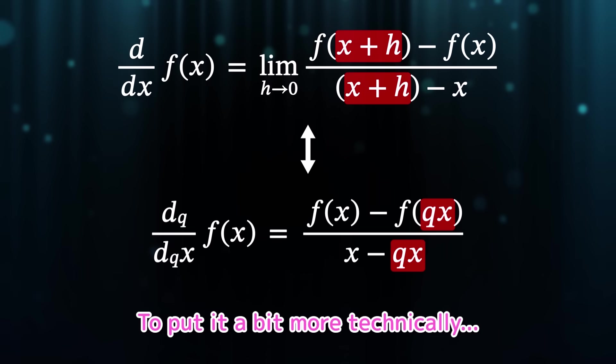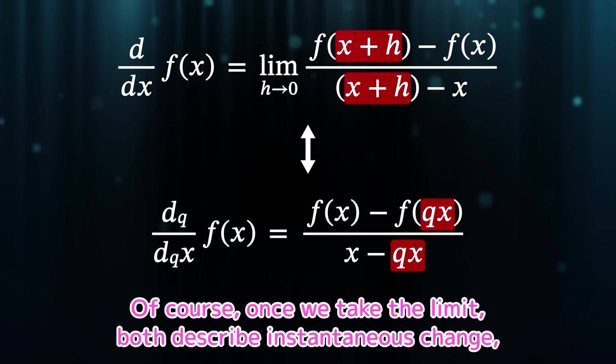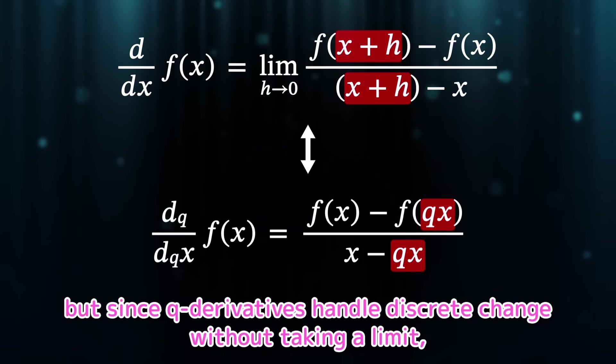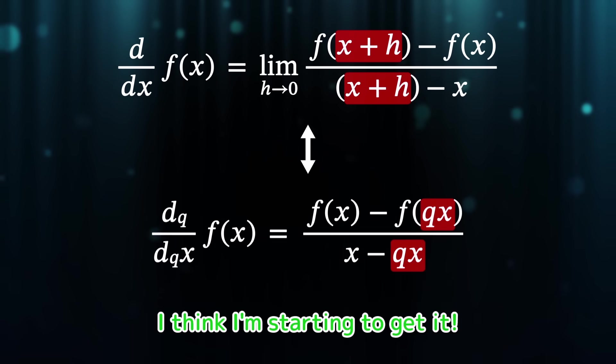On the other hand, with the q-derivative, instead of adding h to x, we multiply x by q. Yes. To put it a bit more technically, this reflects whether we describe change additively or multiplicatively. Of course, once we take the limit, both describe instantaneous change, but since q-derivatives handle discrete change without taking a limit, the difference between additive and multiplicative becomes essential.